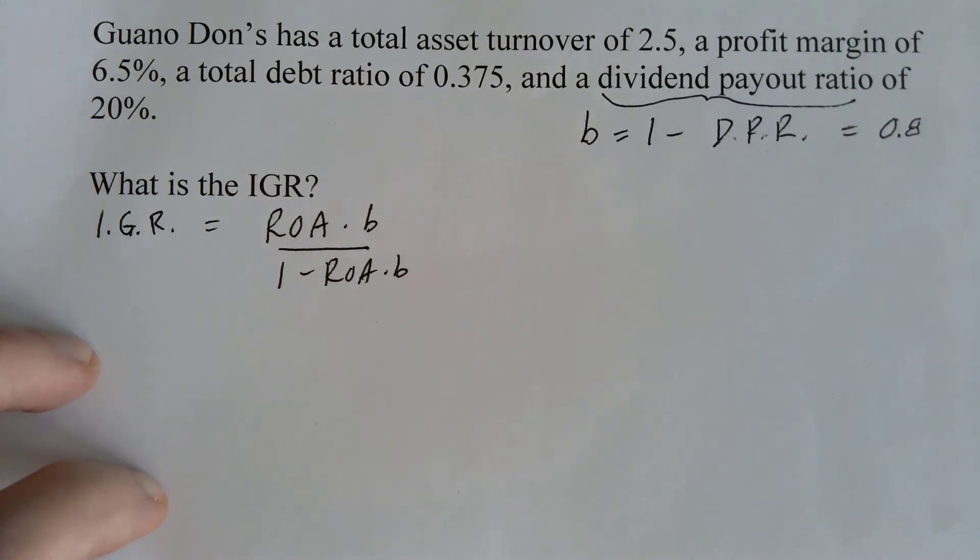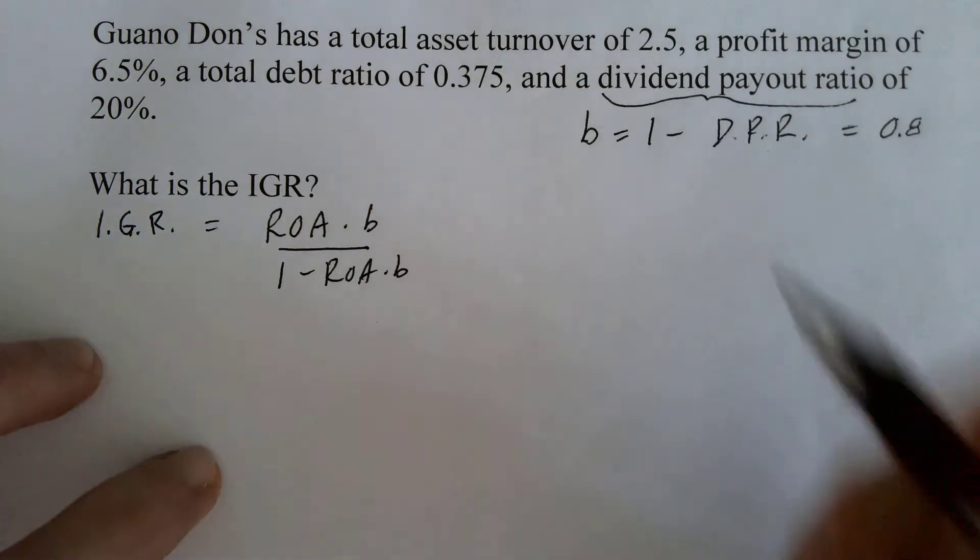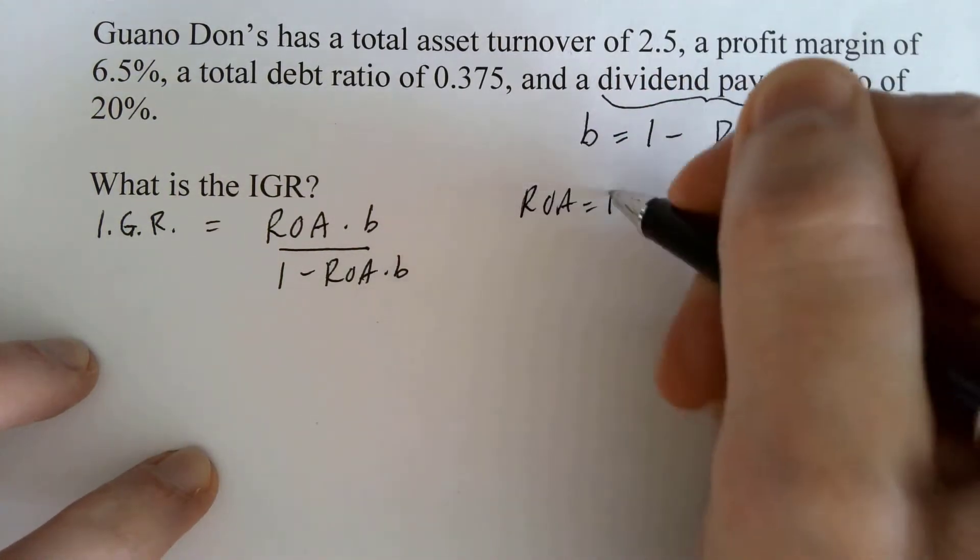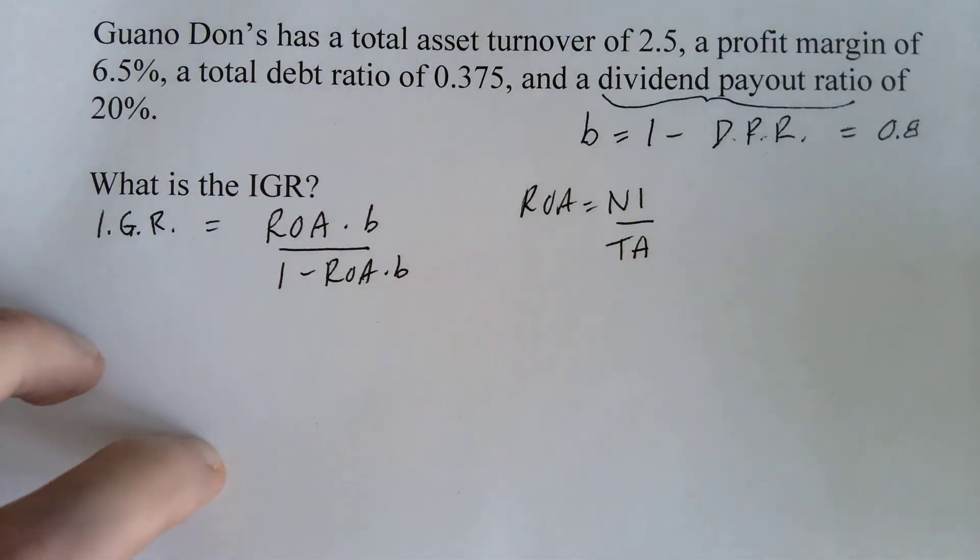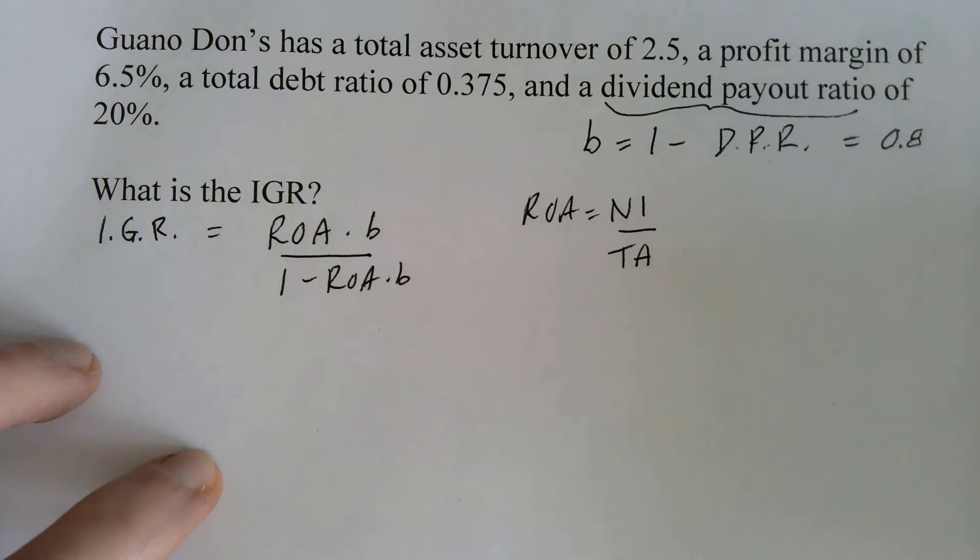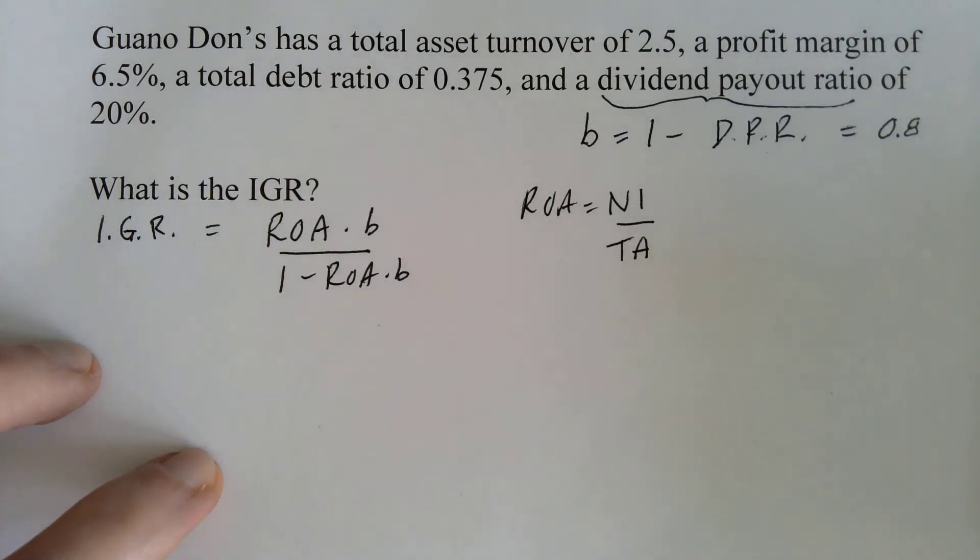Now we only need to find ROA. Well, we know that ROA is equal to net income divided by total assets. Let's go back and read through the problem and see if we've been given either one of those. Guano Dons has a total asset turnover of 2.5, a profit margin of 6.5%, a total debt ratio of 0.375, and then the dividend payout ratio. I don't see net income or total assets, either one there.